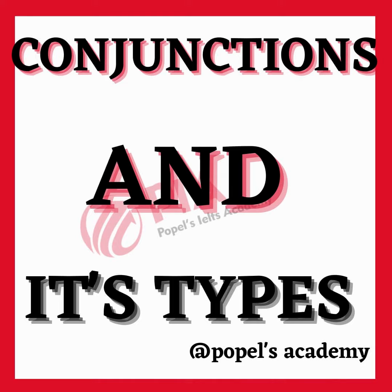There are three main types of conjunctions. Coordinating conjunctions: these conjunctions connect words, phrases, or clauses that are of equal importance in the sentence. The most common coordinating conjunctions are and, but, or, nor, for, yet, and so. Example: John went to the store, and he bought some milk.